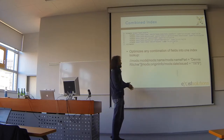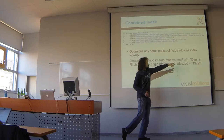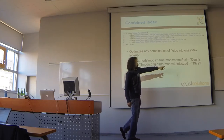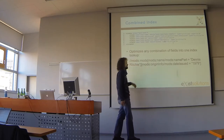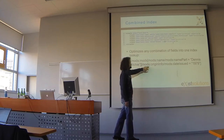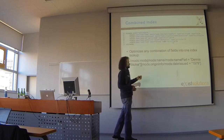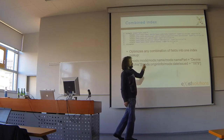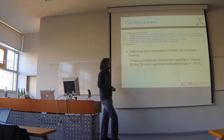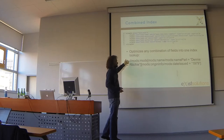With the old range index, it would first have tried to figure out records by author Dennis Ritchie, then take those nodes and check if they have date issued 1979. In that order performance was okay, but if you changed it — date issued first, then the author — it would always get slower, because you'll understand there are lots more records with date issued 1979 than records written by Dennis Ritchie. This is completely replaced now — the entire expression will be replaced with a different one.